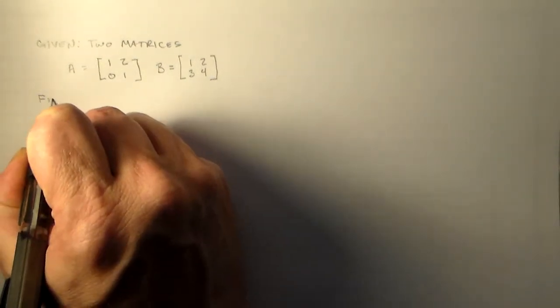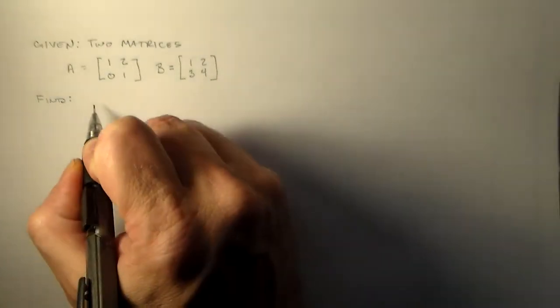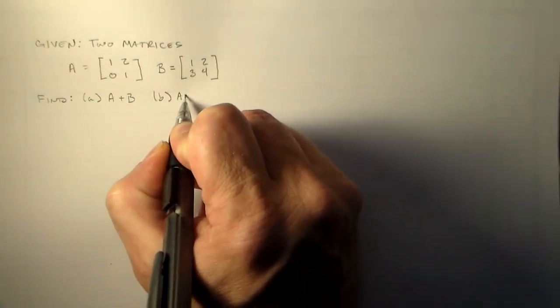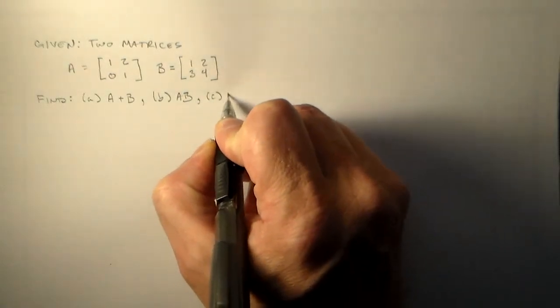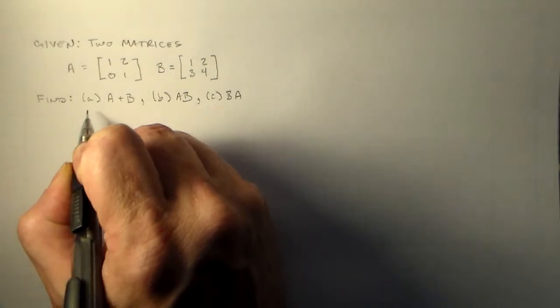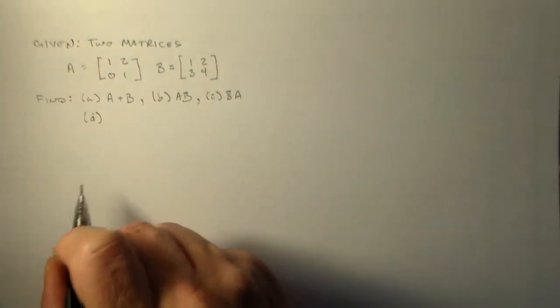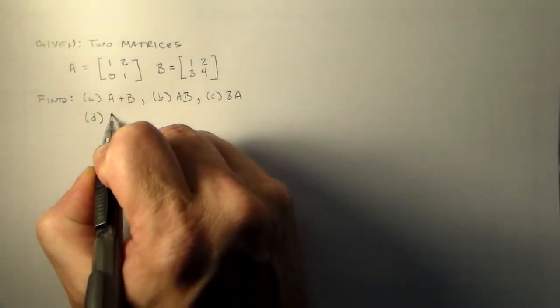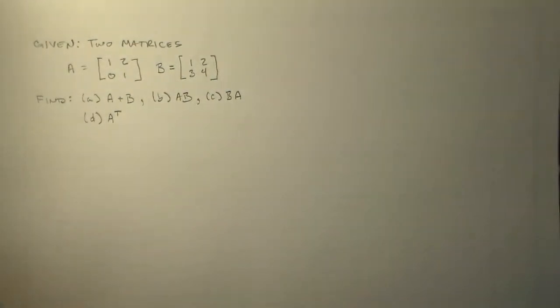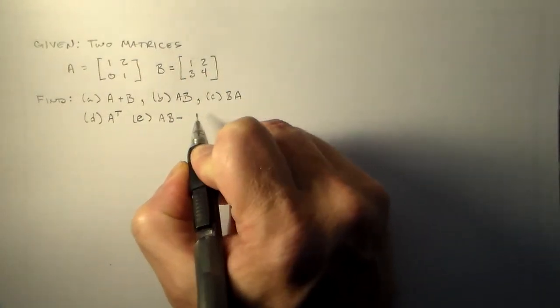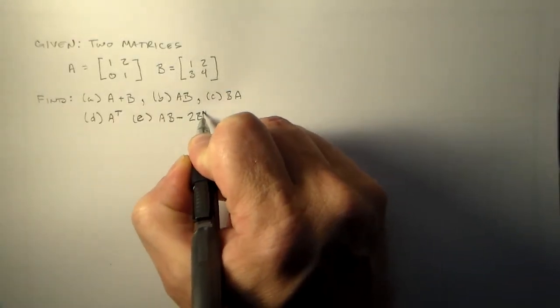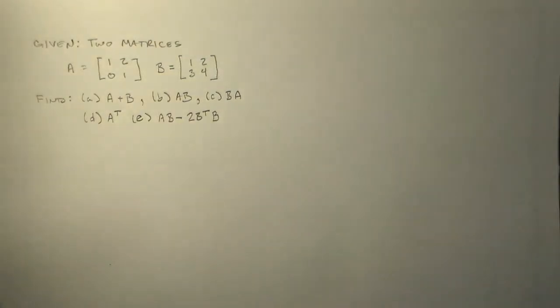And we'd like to find a bunch of stuff. We've got a lot of different things we can look at, maybe just simple addition. Let's add the two together. We can look at matrix multiplication. What happens when we multiply the two matrices together? And if we're going to multiply one way, it's a good idea to check what happens if we multiply the other way. Something strange might happen. And then we'll look at an operation called the transpose, which is a lot of fun. And then we'll look at just some large conglomeration of all these things, just to see what we can do with these matrices.